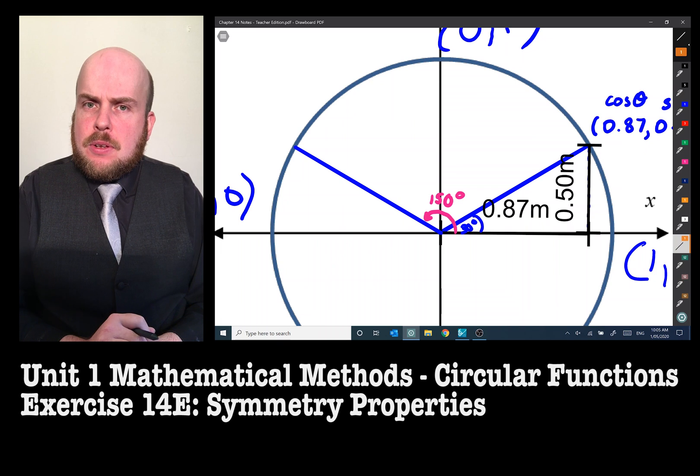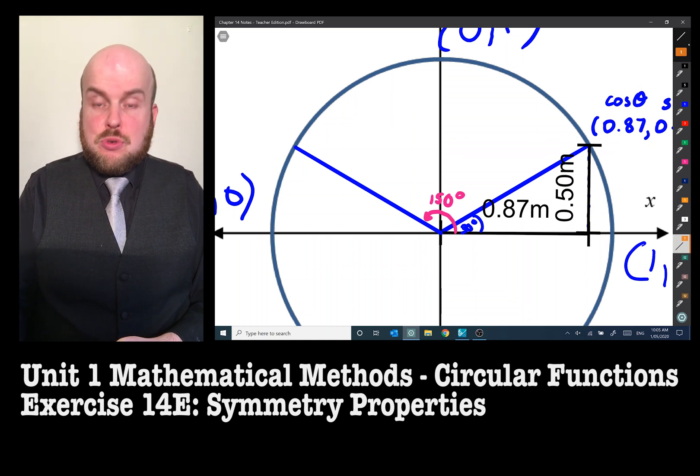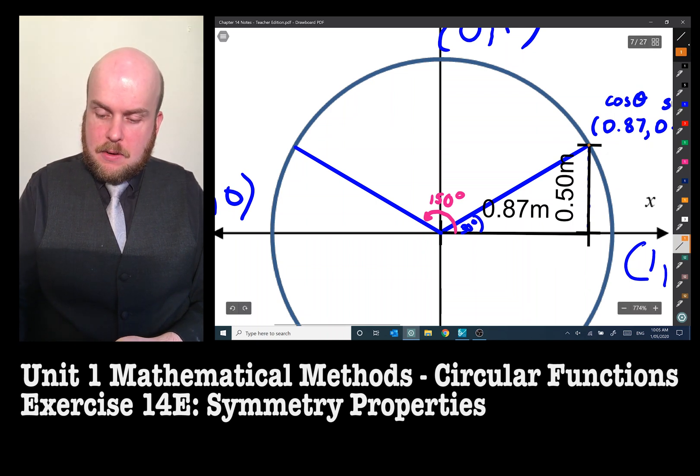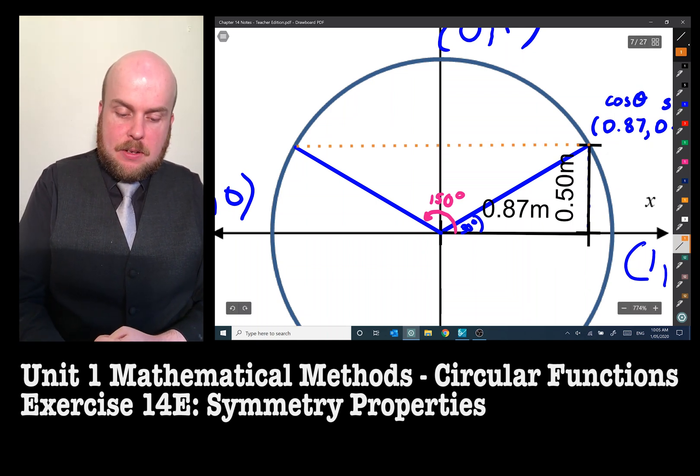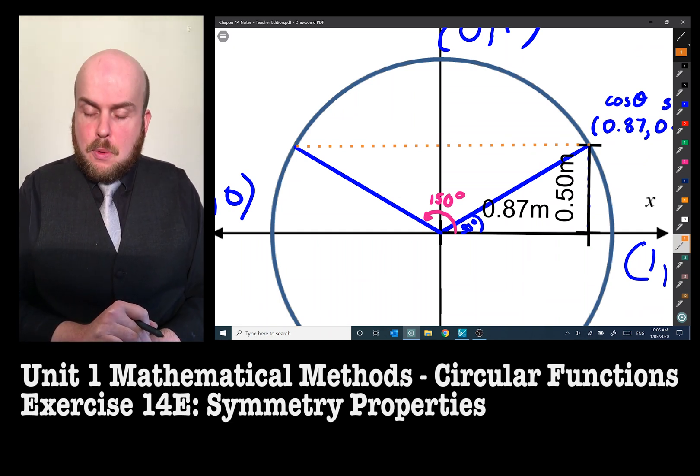So let's see if we can use symmetry properties to solve. If we can see from the graph, and if I was to draw a horizontal line from the coordinates we found to the new point over on the left, we can see it's directly symmetrical.